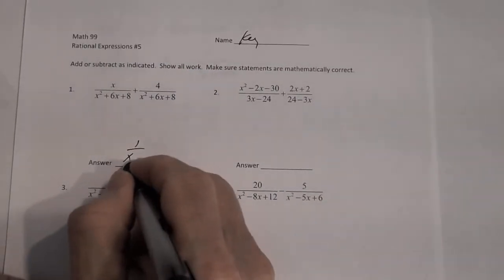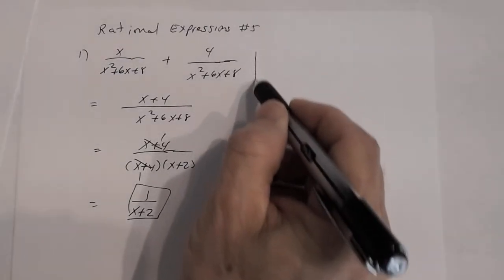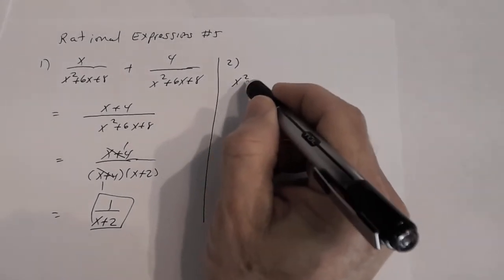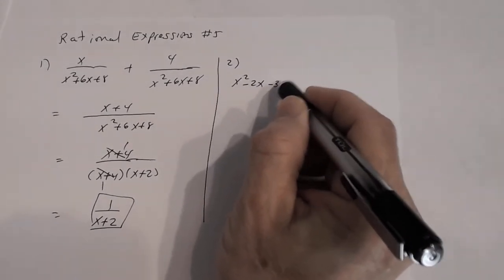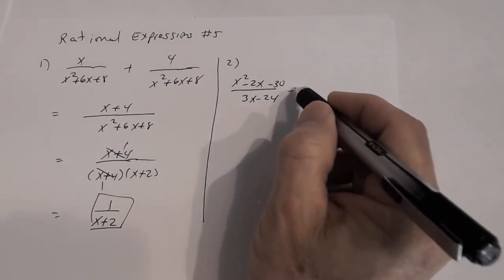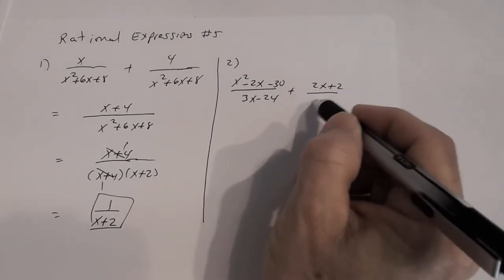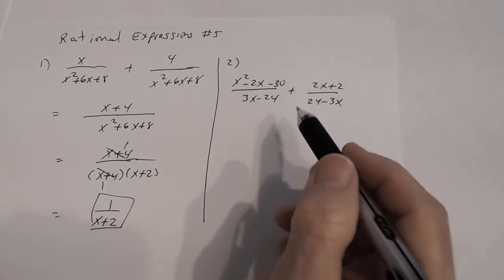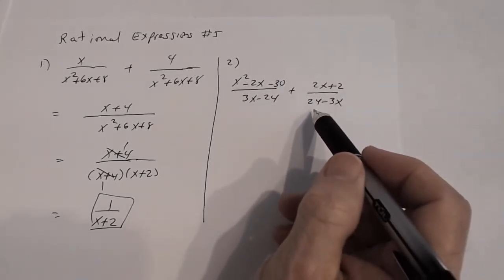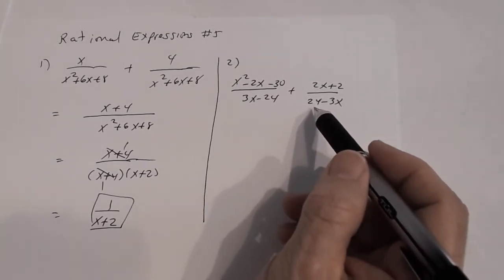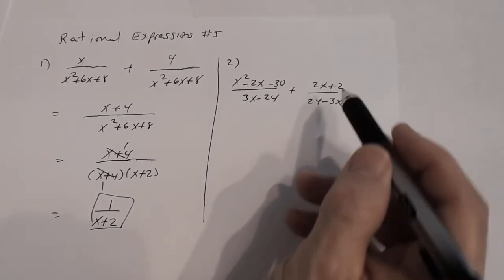You have to show that work. Number two: we have x squared minus 2x minus 30 divided by 3x minus 24, plus 2x plus 2 divided by 24 minus 3x. Now what you have to notice here is that the denominators are not the same, but they are opposites of each other. So you need to use the idea of opposites.